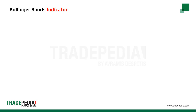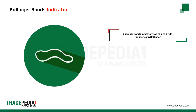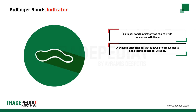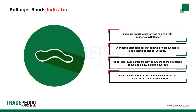Another volatility indicator is the Bollinger Bands. This volatility indicator was named after its founder, John Bollinger. He wanted to create a dynamic price channel that follows price movements and accommodates for volatility at the same time. This indicator is made of three bands, where the upper and lower bands are plotted two standard deviations above and below a moving average. Because standard deviation measures volatility, bands will be wider during increased volatility and narrower during decreased volatility.